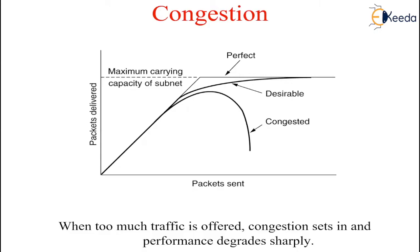Adding more memory may help up to a point. But if routers have an infinite amount of memory, congestion gets worse. It is not better because by the time packets get to the front of the queue, they have already timed out and duplicates have been sent. All these packets will be dutifully forwarded to the next router, increasing the load all the way to the destination.